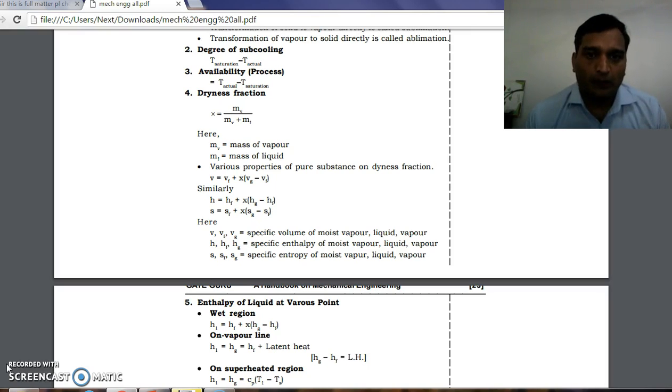Various properties of pure substance in terms of dryness fraction: specific volume v equals v_f plus x times (v_g minus v_f). v_g minus v_f can be written as v_fg, where v_f is the specific volume of liquid and v_g is the specific volume of vapor.